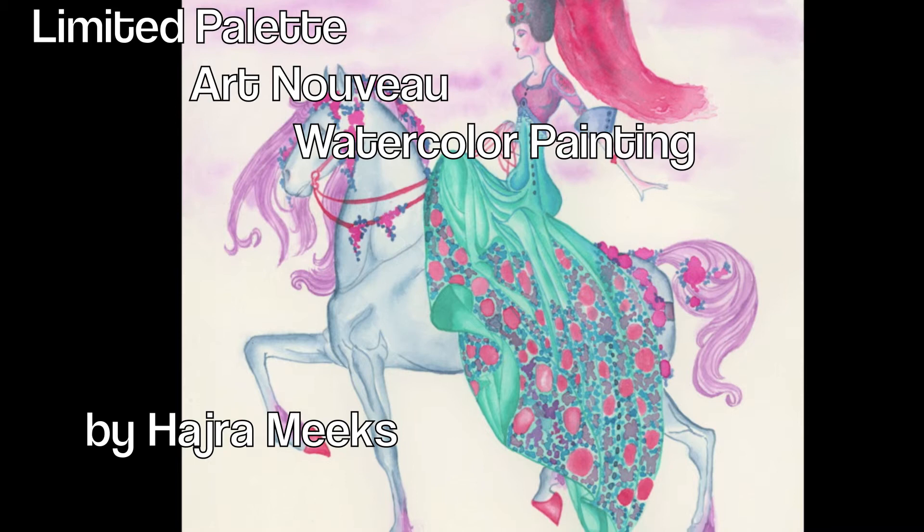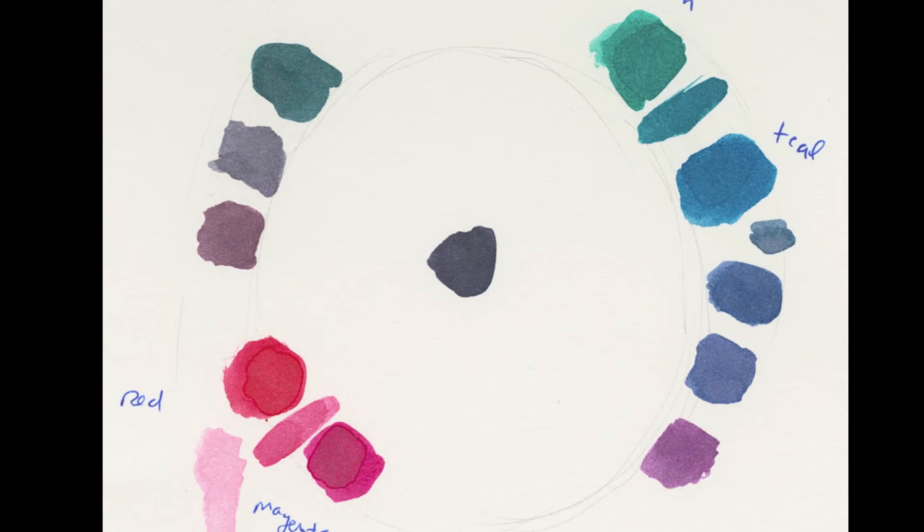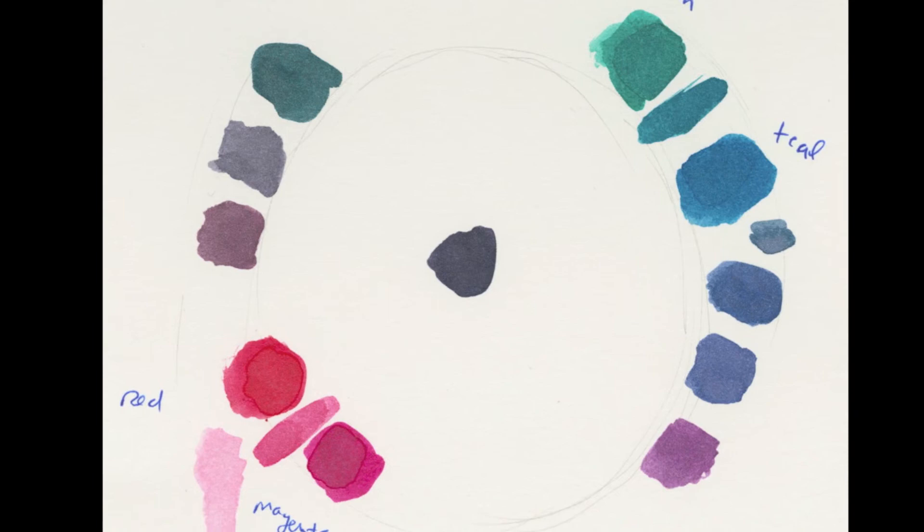Doing this painting will be great practice for an advanced project where you come up with your own illustration. Remember you're learning a lot from the masters of Art Nouveau so if you like this art style it will help you develop your own. Especially because you're doing projects with limited color schemes that you come up with so you're making intelligent color choices. To digitally color this painting and one of many limited color schemes go to hajramix.com forward slash journey color.